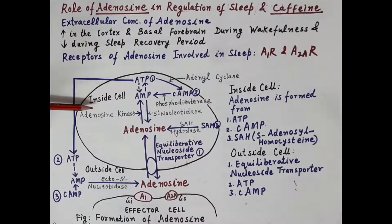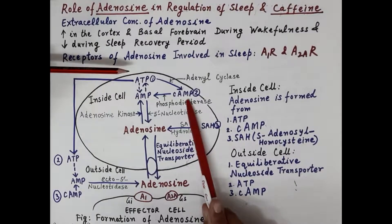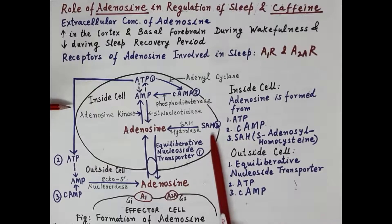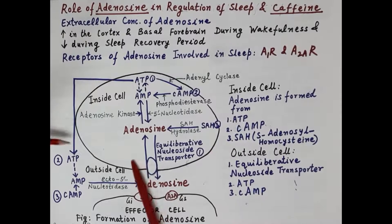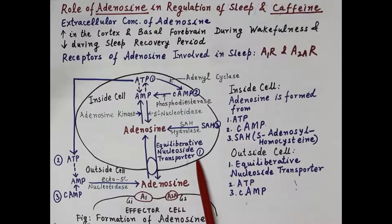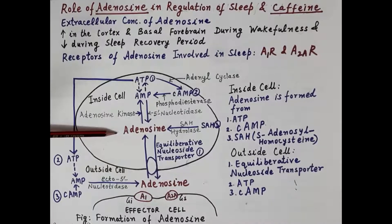Inside the cell, adenosine is formed from three sources: ATP, cyclic AMP, and SAH (S-adenosylhomocysteine). When there is a rise in adenosine levels during wakefulness, adenosine is transported outside the cell via the equilibrative nucleoside transporter, moving from intracellular to extracellular fluid.